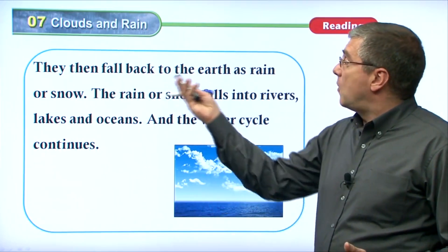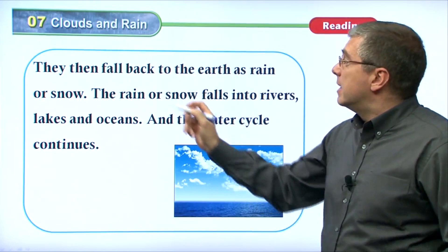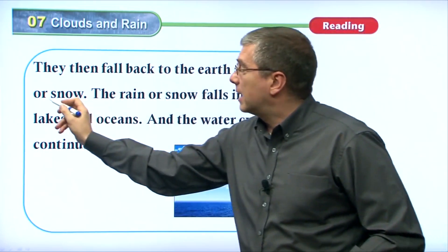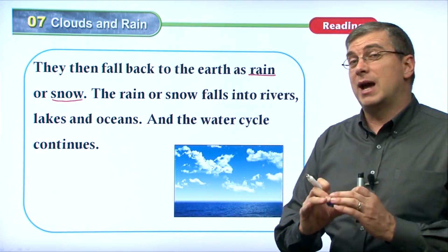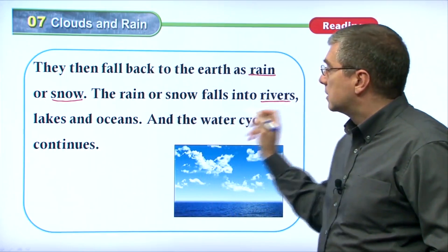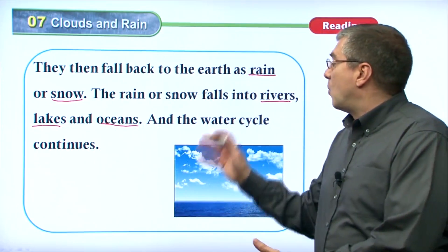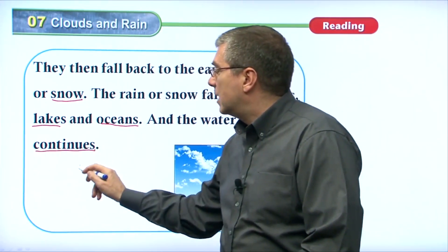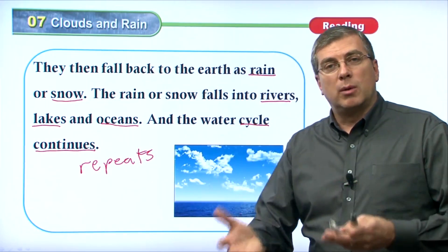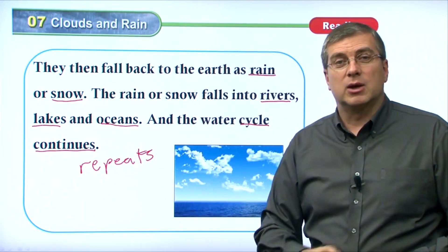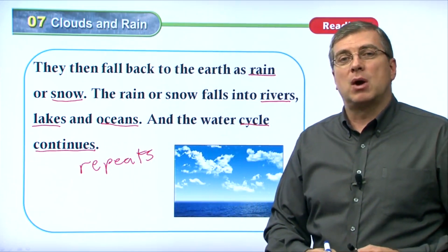As those little drops grow in size, they fall back to the earth as rain or snow — they're too heavy to stay in the air. If it's warm, it falls as rain; if it's cold, it falls as snow. The rain or snow falls into rivers, lakes, and oceans. Now it's back in the ground, and the water cycle continues — it repeats itself again and again. The sun will warm it up and start a new cycle. Water moves from place to place, and that is part of the water cycle.